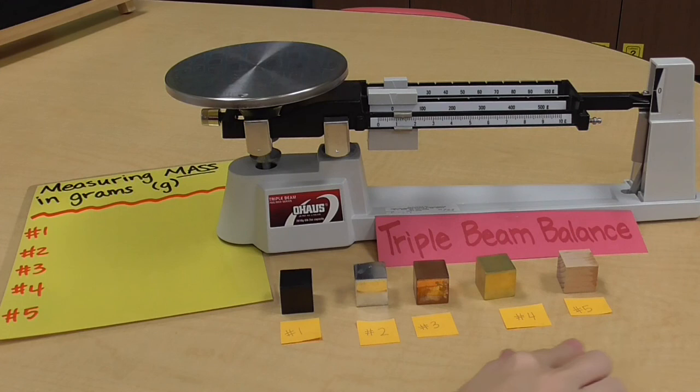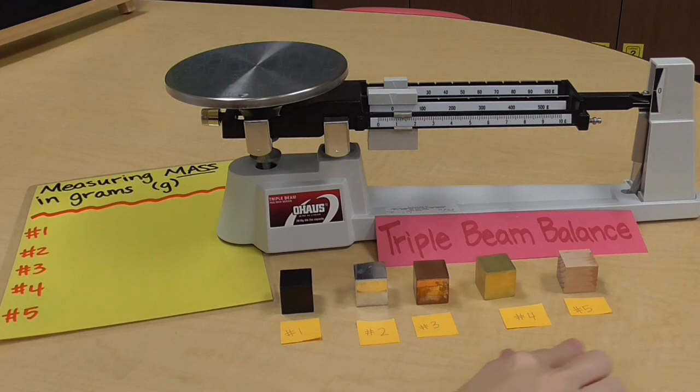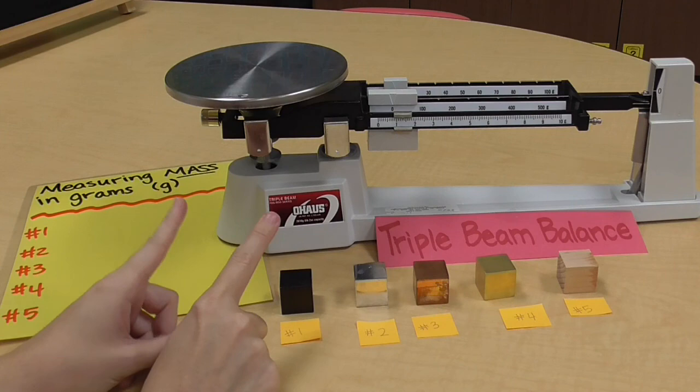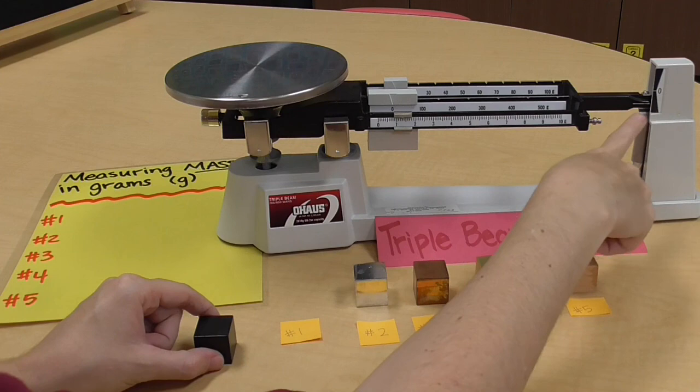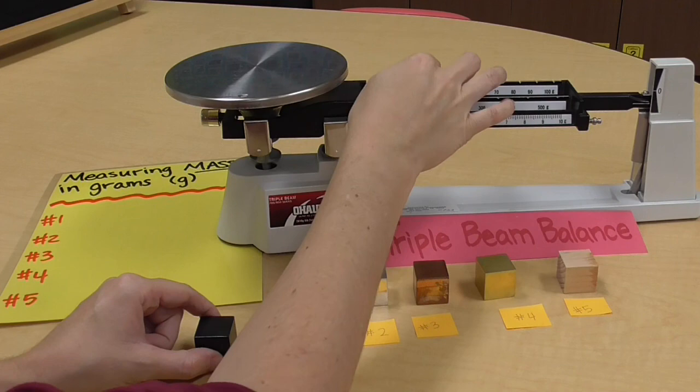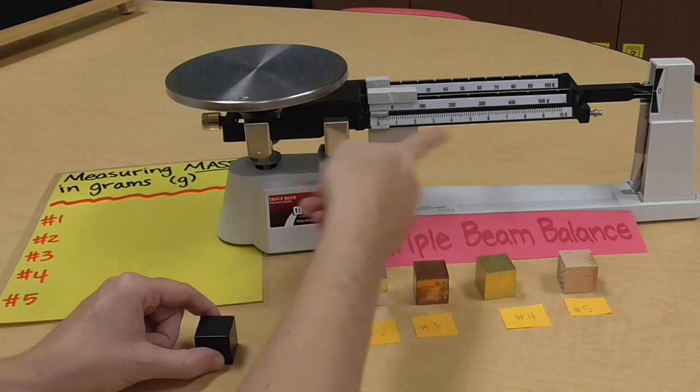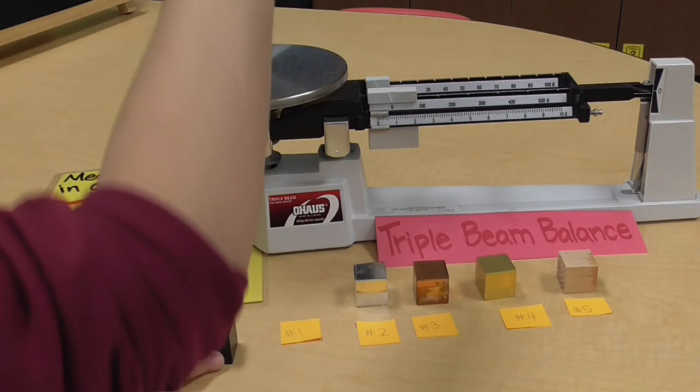So, here are our five mystery items that we don't know what they are, but we're going to measure their mass in grams using our triple beam balance. So, I'll start with number one. First, I need to make sure that my pointer is at the zero mark right here. As you can see, it's not because not everything is pushed over to the left, all the way at the zeros. So, I'm going to push everything all the way to the left so that my ones place is at the zero, my hundreds place in the middle is at the zero, and my tens place in the back is at the zero.